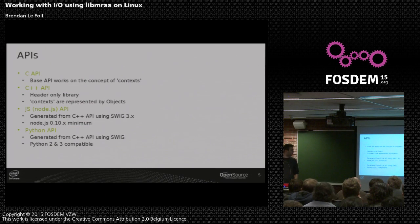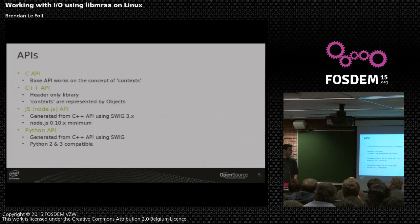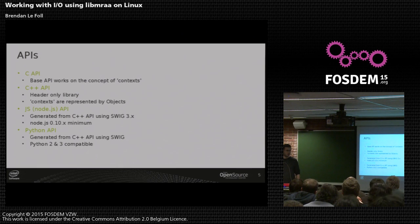We support a bunch of APIs. I forgot I was going to do a demo first, but I'll do a demo right after this. We have a C API, which is our base API — the entire library is written in C. Then we have a C++ header-only library. And then we use SWIG to generate JavaScript and Python APIs with a bunch of interface files to try and make it slightly nicer to use.